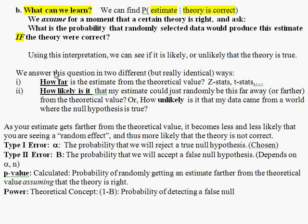We answer this in two different ways. First, you can think about calculating how far is the estimate from some assumed value, some theory would predict. And we can also calculate the probability, how likely is it that our estimate could randomly be this far away from the theoretical value, assuming that the theory is true?